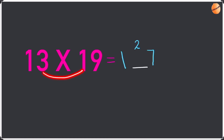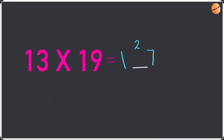Then multiply the numbers like this: 3 times 1 and 1 times 9. 3 times 1 is 3, and 1 times 9 is 9. Add these up — 3 plus 9 is 12. So write the 2 and take the 1 as a remainder.